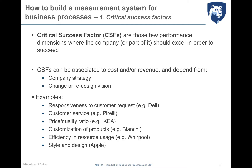Another critical success factor is the price-quality ratio. IKEA, the famous home furniture producer and distributor, succeeds by offering products at an affordable price and reasonable quality. Another example is product customization — Bianchi, a European sport bicycle producer, allows customers to customize color, components, and operations in almost any combination, with delivery in a reasonable amount of time.